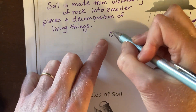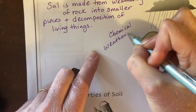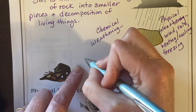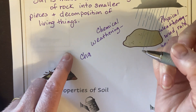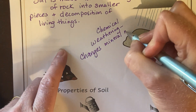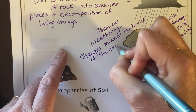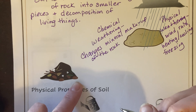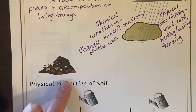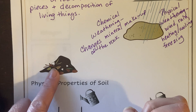We also have chemical weathering. Chemical weathering changes the mineral makeup of the rock. An example of chemical weathering would be acid rain — it dissolves some of the minerals in the rock, and that dissolving of pieces of the rock can make small pieces that eventually create soil.